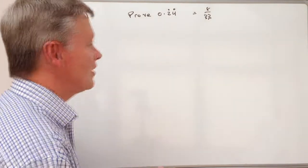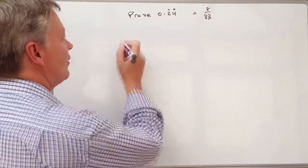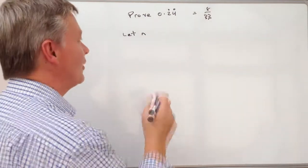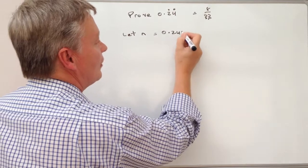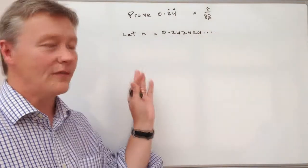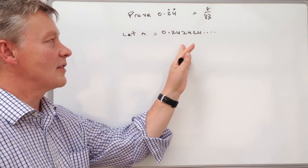The way that we do that is we use algebraic proof. So I'm going to say let n, and it could be n or x or whatever you want, equals 0.242424 and so on. So that's the value of n that I'm going to use.